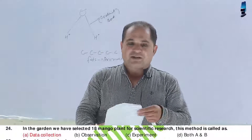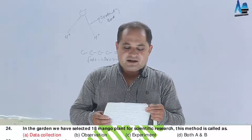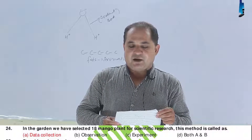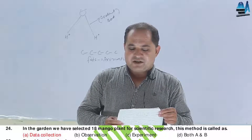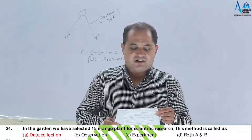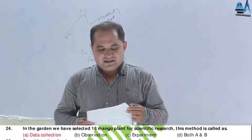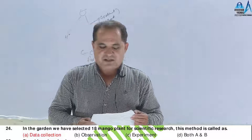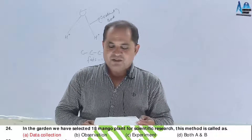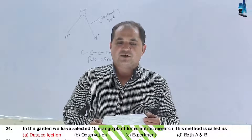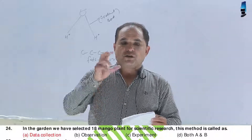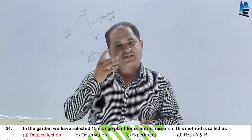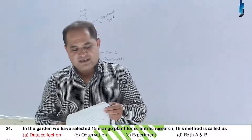Question number 24. In a garden, we selected 18 mango plants for scientific study. This method is called: A, data collection; B, observation; C, experiment; D, both of these. Since we have numbers and digits recorded, it is called data collection. Answer should be A.